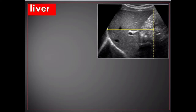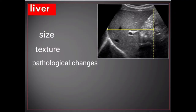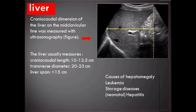We will begin with liver. Ultrasonography of the liver is one of the most routine investigations in which we assess the size, texture, and pathological changes. It is a first-line investigation for differential diagnosis of suspected liver pathologies. Craniocaudal dimensions of the liver on the mid-clavicular line are measured with ultrasonography.